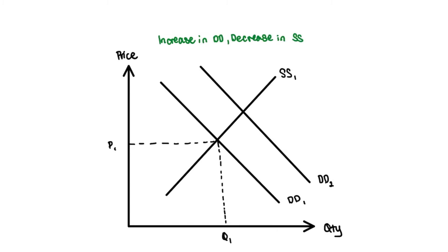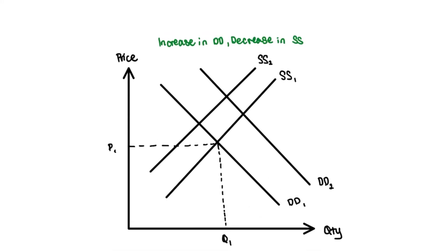Now we have the decrease in supply. You just want to draw the new supply curve which should be to the left. If it's a decrease it will be a leftward shift. This would be SS2, supply curve number two.